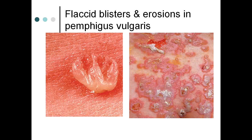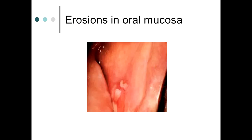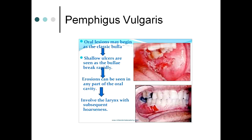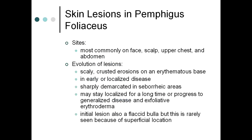Images show a flaccid blister with pus accumulation surrounded by erythema. Erosions with crusted lesions are also seen. Oral mucosa involvement shows buccal erosions — oral lesions begin as classic bullae that rapidly break into shallow ulcers. Erosions can be seen in any part of the oral cavity; even the gingivae may be involved. Laryngeal involvement leads to hoarseness.